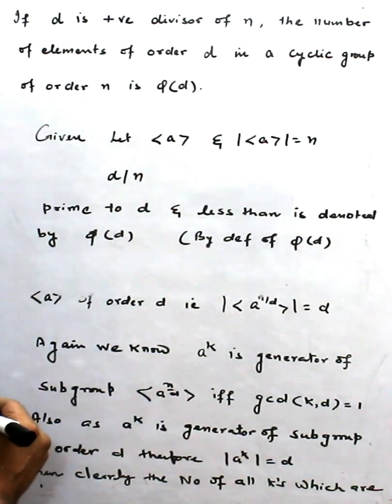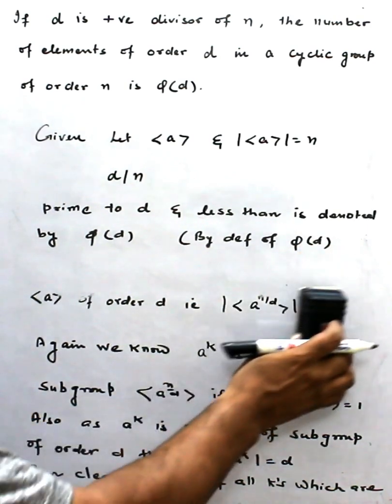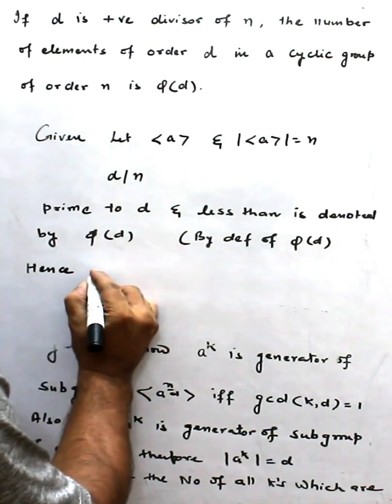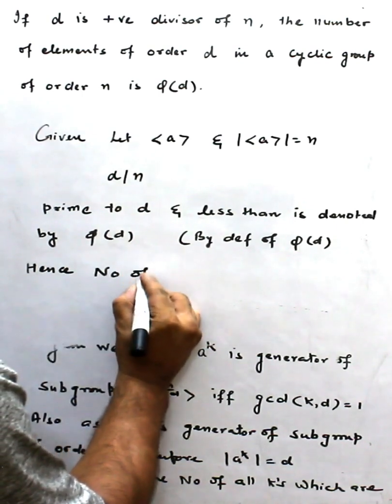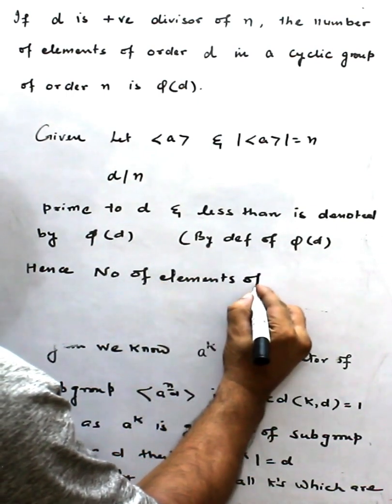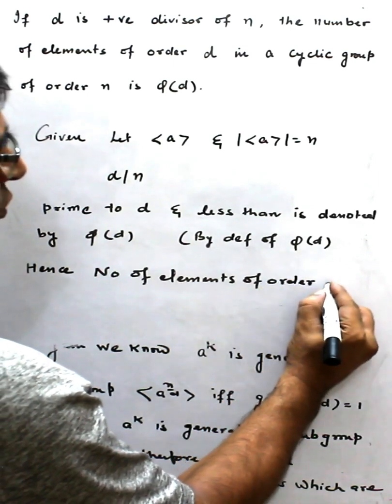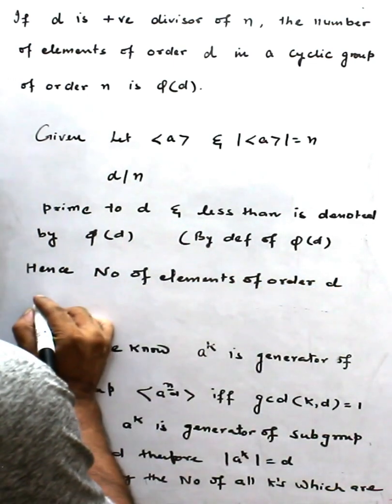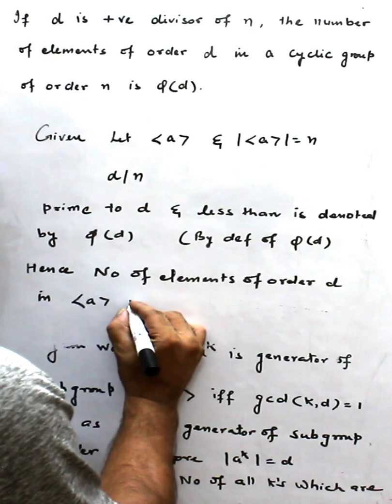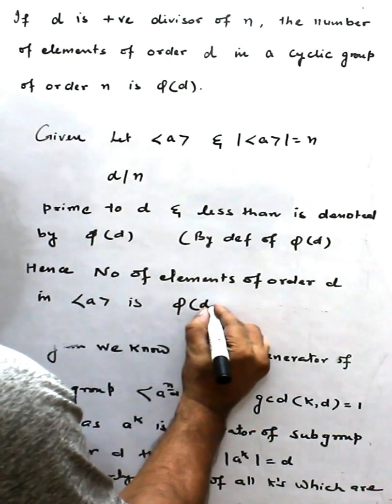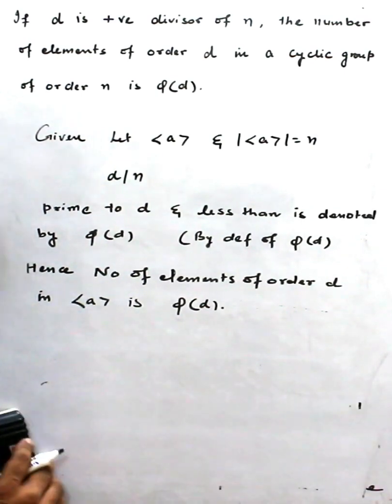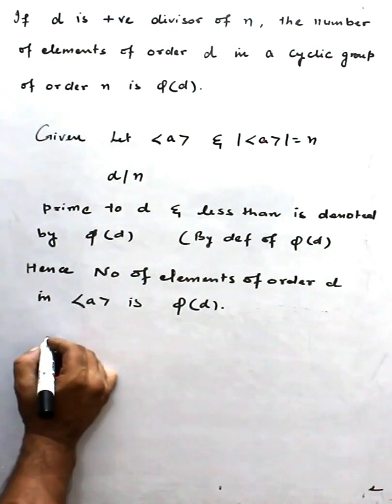Hence, we can say the number of elements of order d in <a> is φ(d). This is the proof of the theorem. Hence proved.